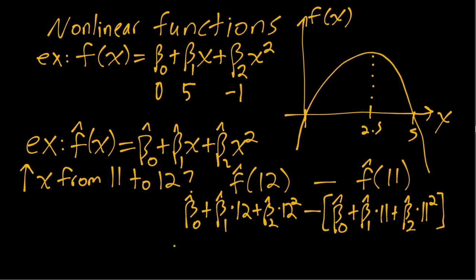We'll get zero for the intercepts, beta hat 1 times 1, and then for the squared terms beta hat 2 times 12 squared minus 11 squared. If we put that all together, we'll get a single beta hat 1.